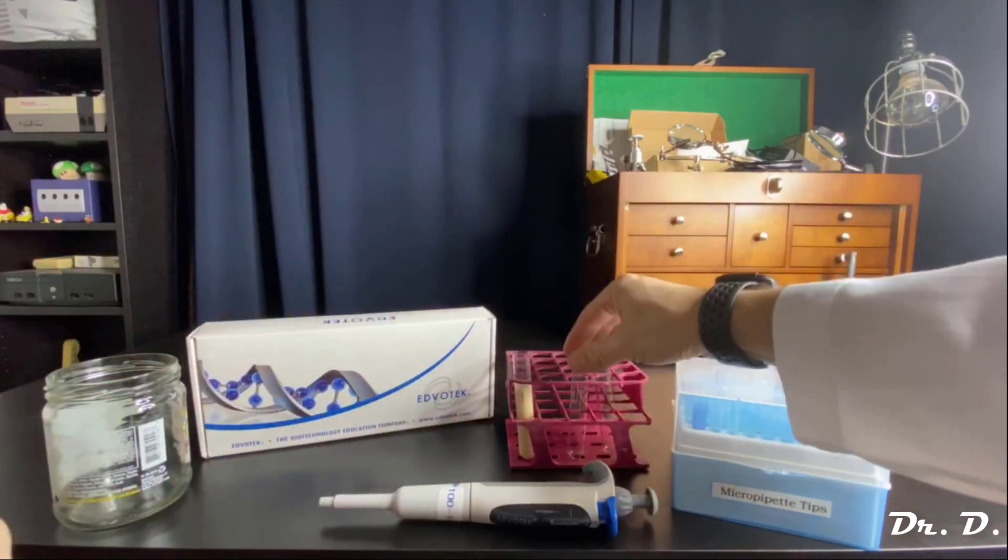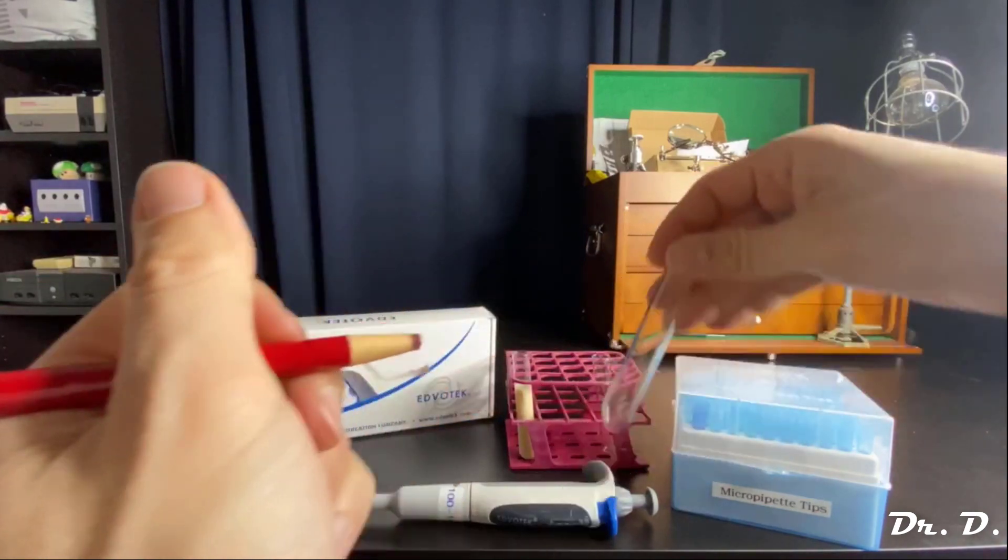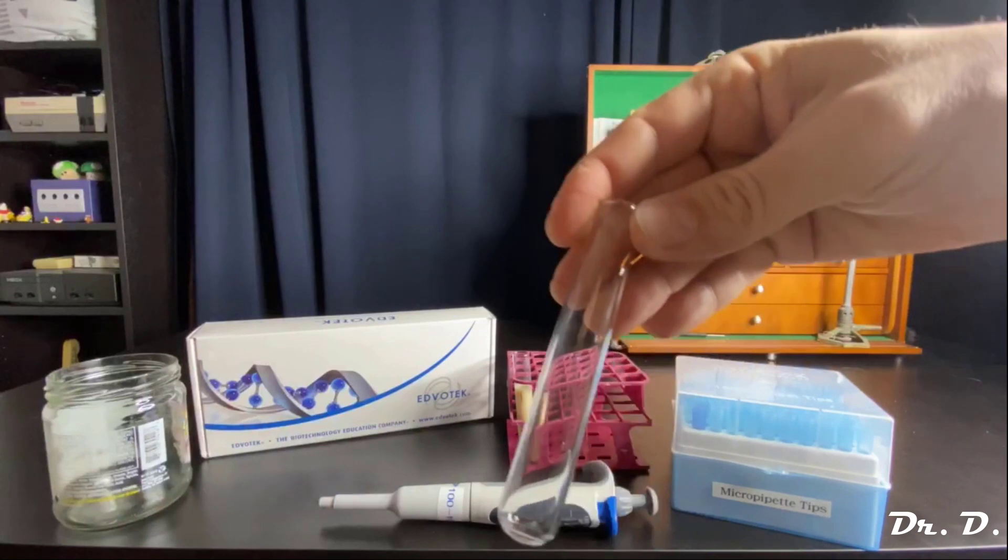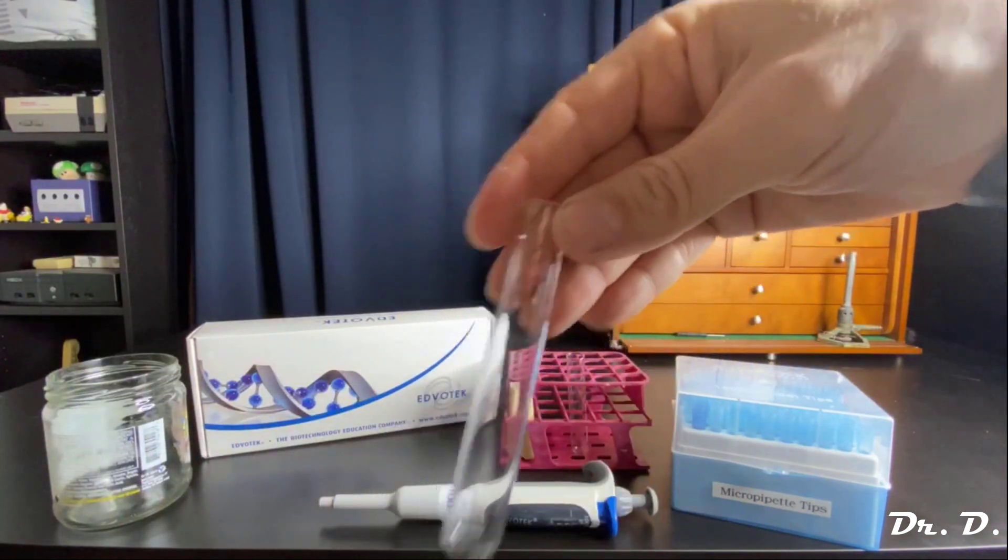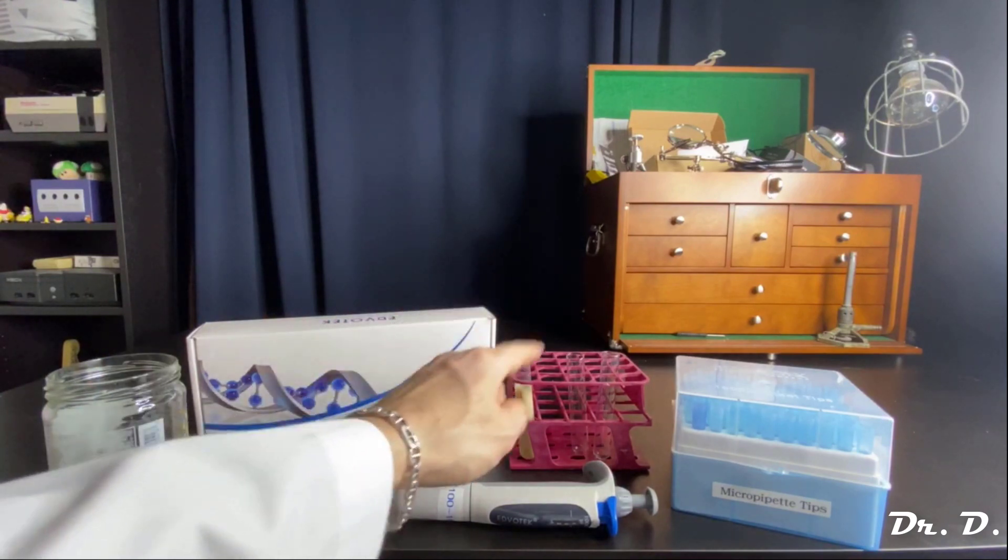So I could write test tube one here. I could write test tube two or three or whatever you want to do. A, B, C. There's two. My handwriting is pretty terrible today, but that's fine. I can see what I want. That's tube three. All right. So I've now marked my tubes one, two, and three.